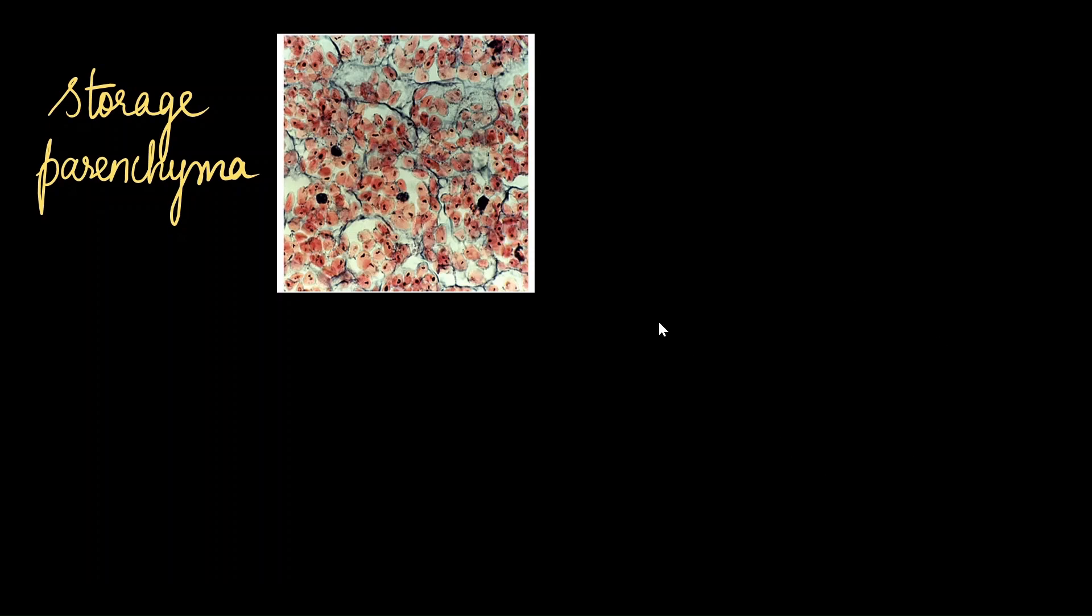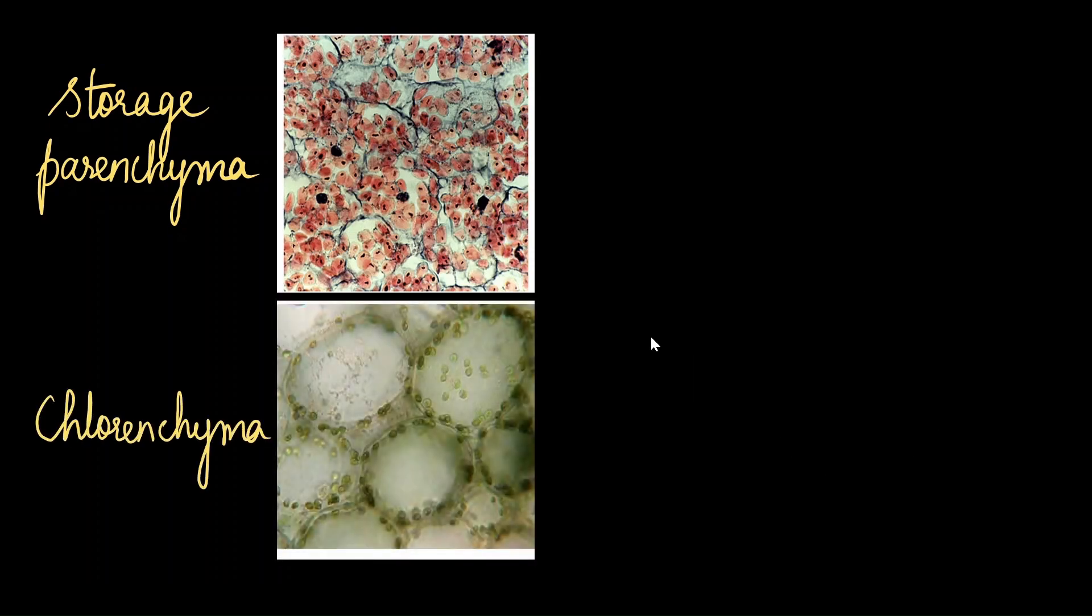If the parenchyma cells have chloroplasts, they are called chlorenchyma and their primary function is photosynthesis. They are found in all green parts of the plant. Primarily, they are found in leaves.